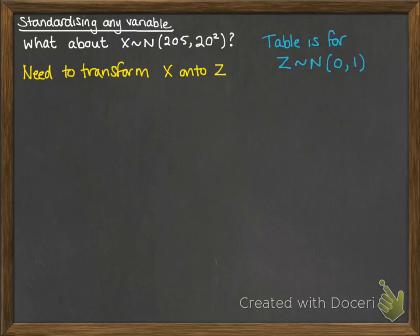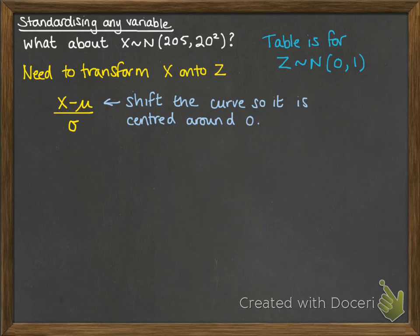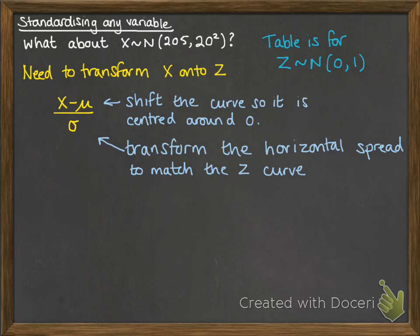If you think about your transformations of curves, we're going to apply the same principles. So we want whatever our x distribution is, we want to shift it down to have the mean 0 and we want to shrink or expand it so that the standard deviation is 1. First of all, if we do x minus mu, where mu is the mean, so in this case the 205, that will do the job of transforming it so that it shifts the curve and it's centered around 0. If we want to change the spread, the size of that curve horizontally, we need to do a division. So we'll divide through by the standard deviation so that we can get it to match 1. This transforms the horizontal spread.